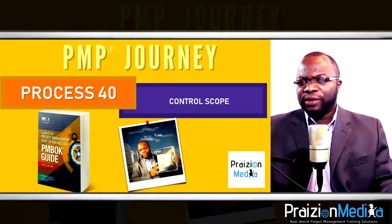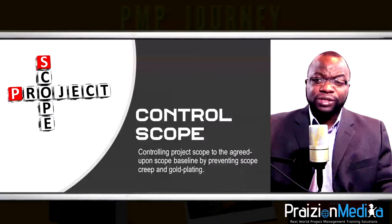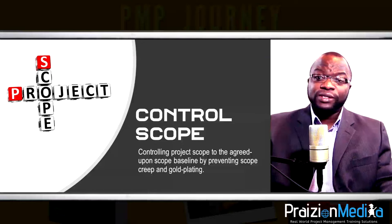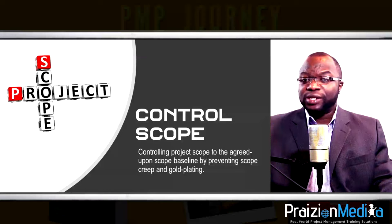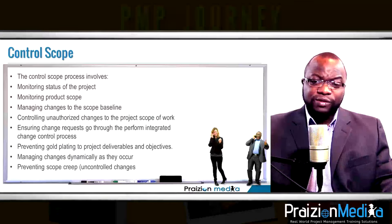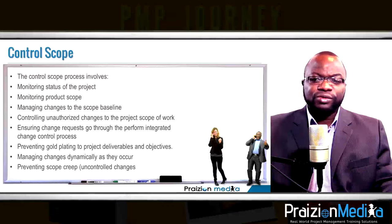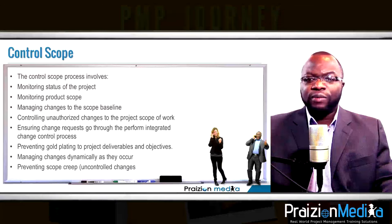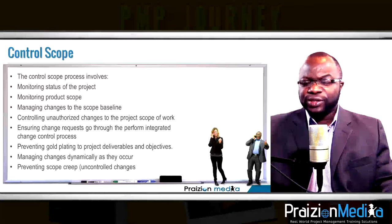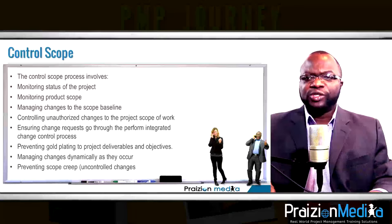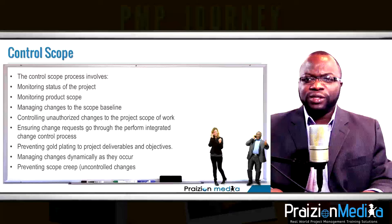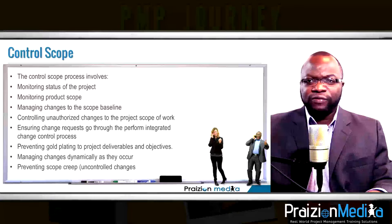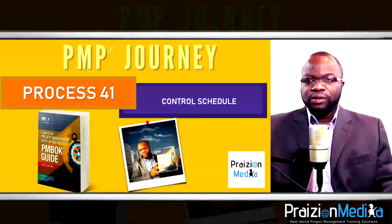Process 40: Control scope. Have you ever heard about gold plating — adding extras that are not needed and were not authorized? In control scope, the project manager ensures no one is adding extras and there's no scope creep. If someone tries to add extras, those requests must be funneled through the perform integrated change control process. It's not uncommon to find opportunities to add extra benefits to the customer, but all of this must be done in a coordinated fashion.